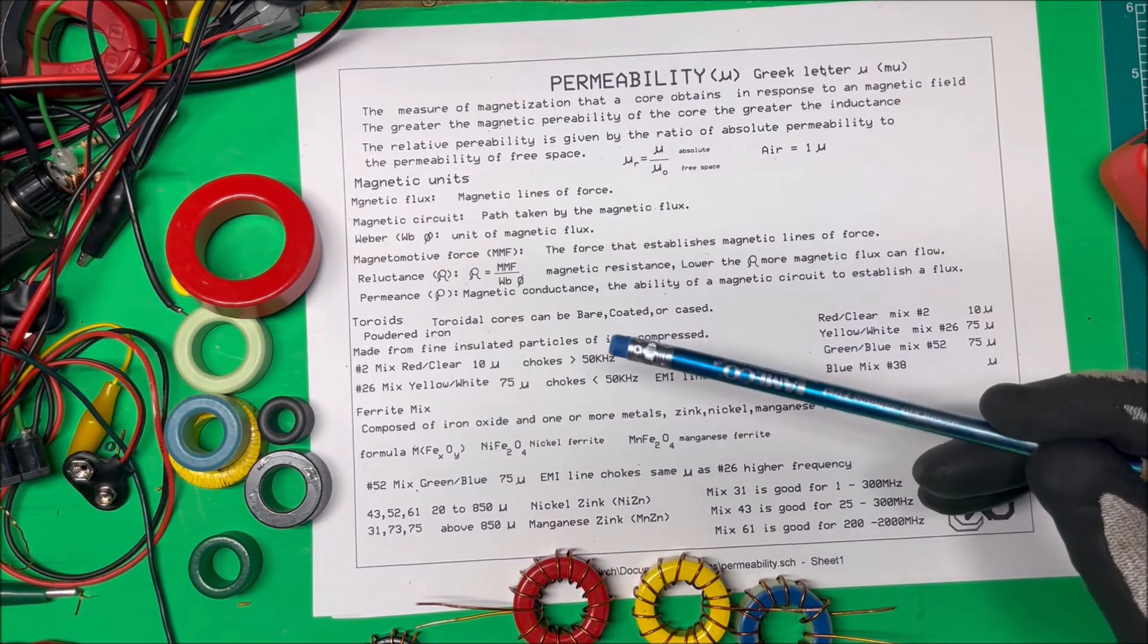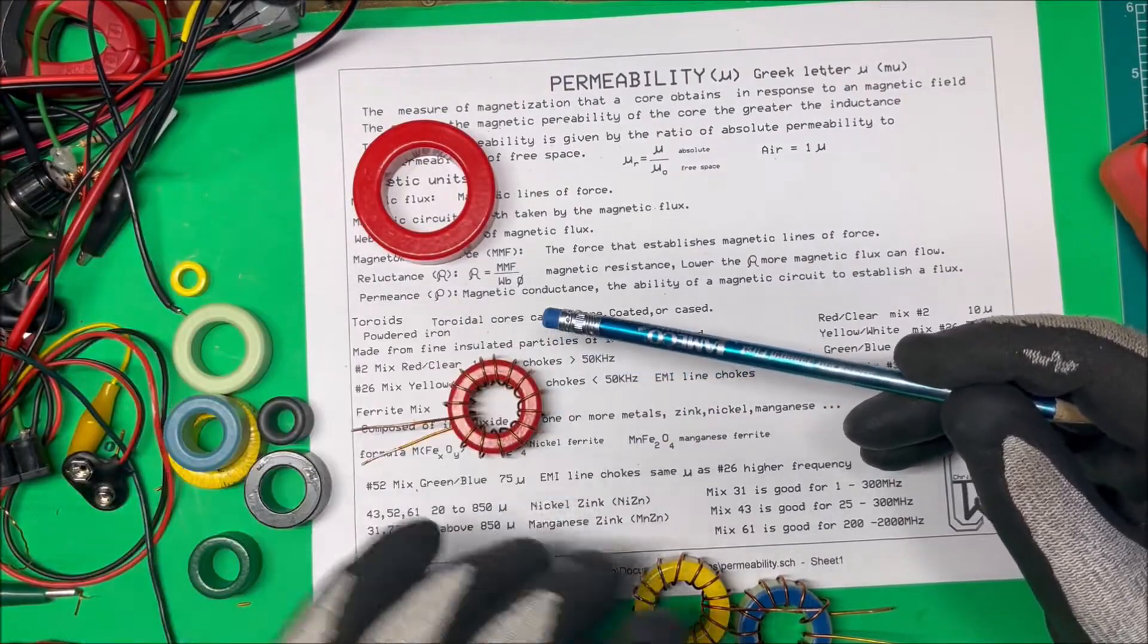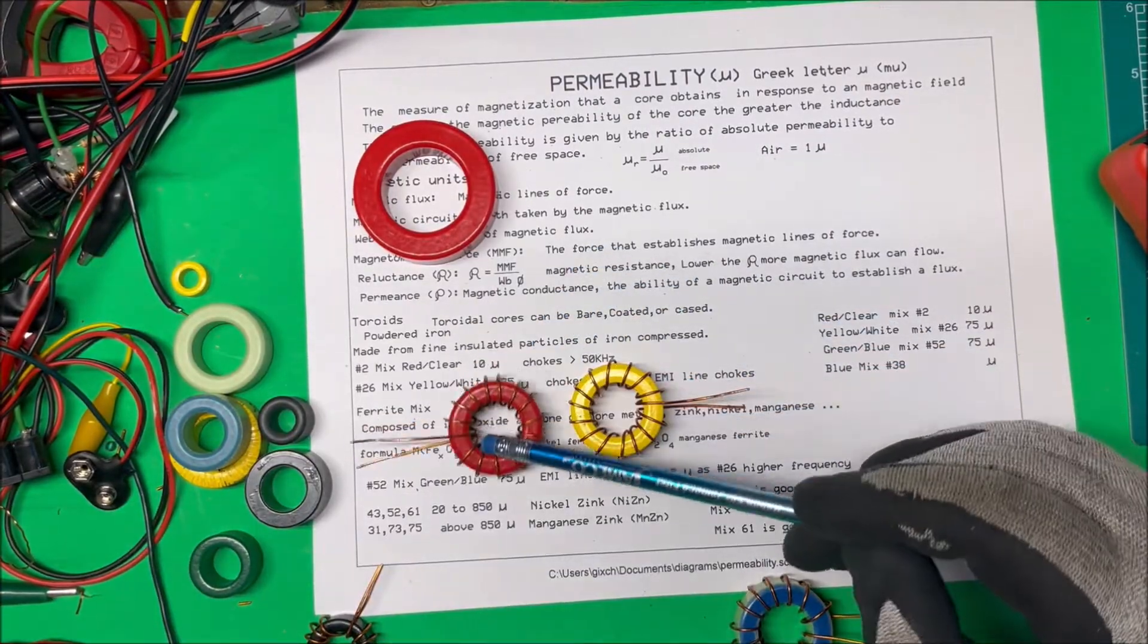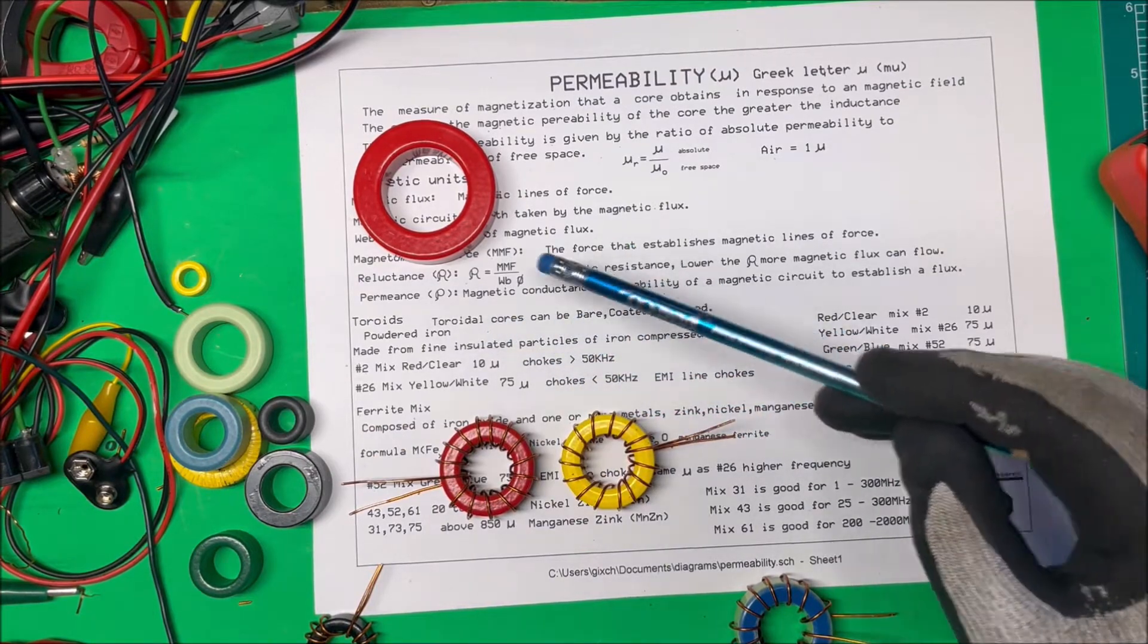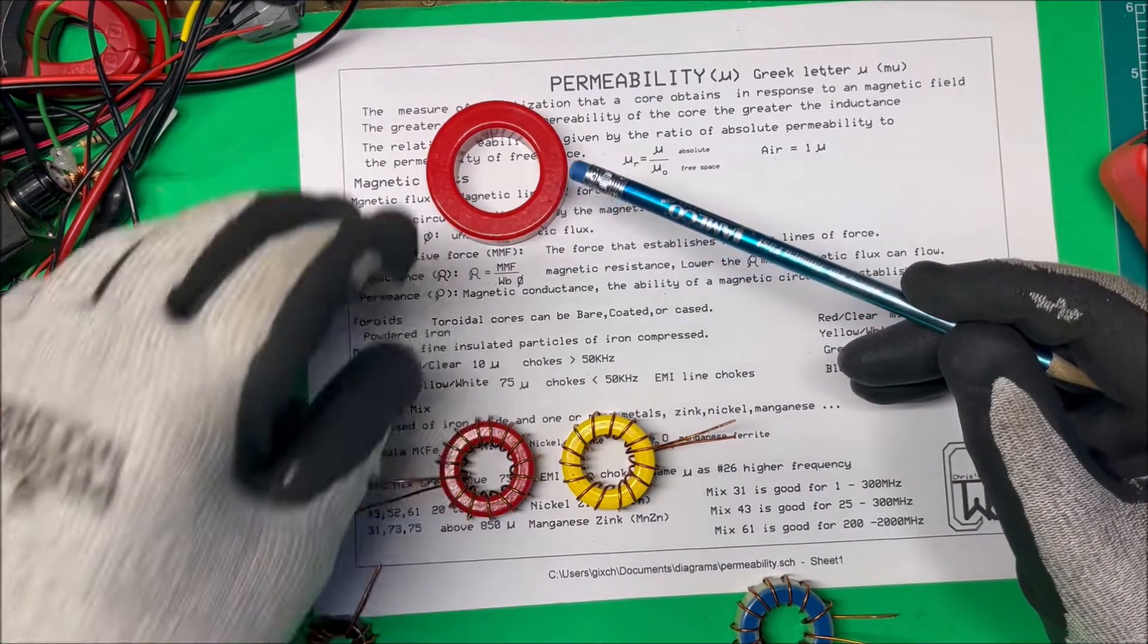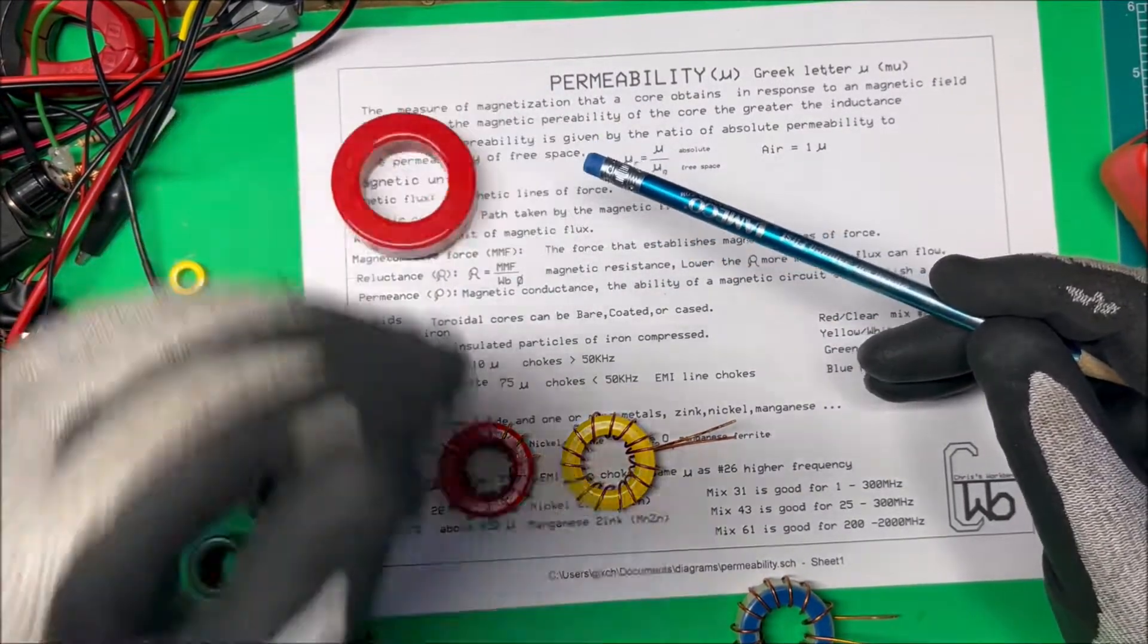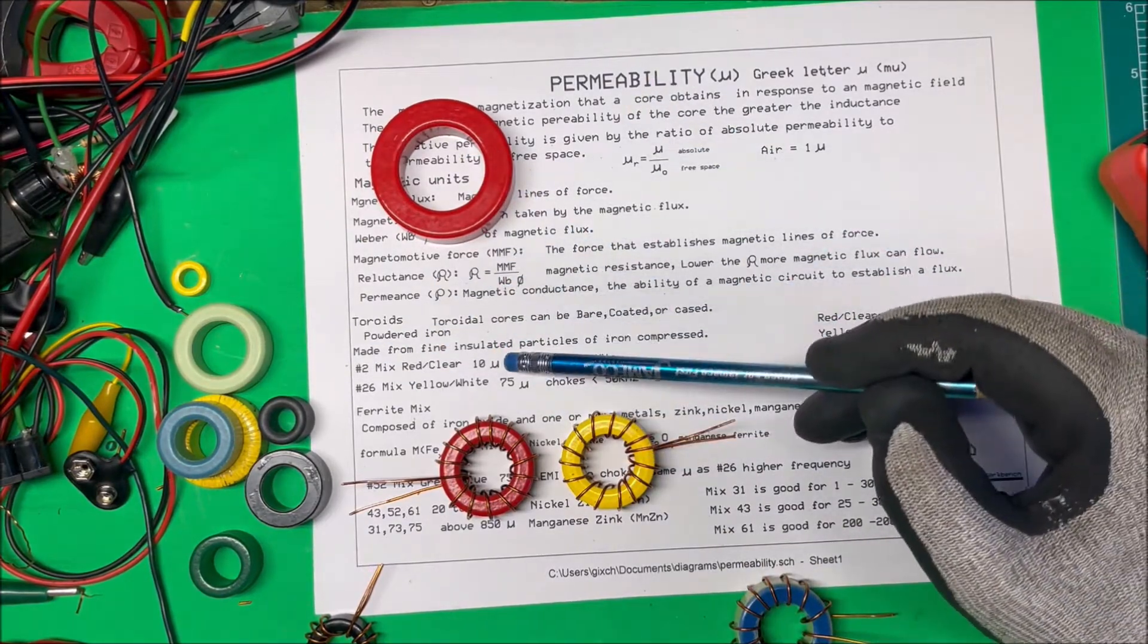So we're going to take a look at some toroids. We'll start off with the powdered iron ones. These are powdered iron, and those are made from fine insulated particles of iron compressed together. This one here, this red, and then the backside is just clear, that's a number two, and that has a permeability of 10.